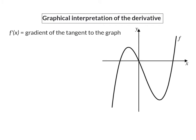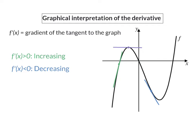We know that the derivative determines the gradient of the tangent at any point on the graph. This gradient can now indicate one of three things. Firstly, we can get a positive gradient, and a positive gradient will be an indication that the graph itself is increasing at that point, meaning that the graph is moving up from left to right. Or we can find a negative gradient, and that negative gradient will indicate that the graph is decreasing at that specific point, which means that the graph is moving down from left to right. And lastly, we can get a gradient that is equal to zero, and this we are going to call a stationary point.